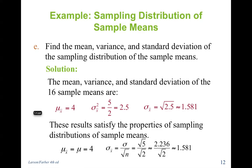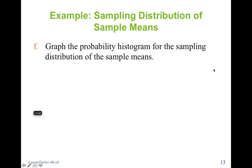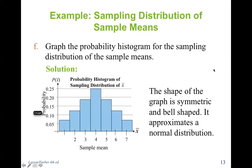These results satisfy the properties of a sampling distribution of sample means. You can go through all of this manually, or I'll go over how to do it in Excel. If we graph the probability histogram for the sampling distribution of sample means, you would notice that it's symmetric and bell-shaped, and it approximates a normal distribution — and that leads us into the central limit theorem.